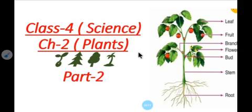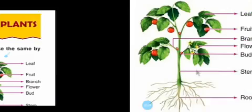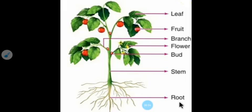In my previous video we started our chapter on plants and we discussed the different parts of the plants. The different parts of the plants are leaf, fruit, branch, flower, bud, stem, and root.